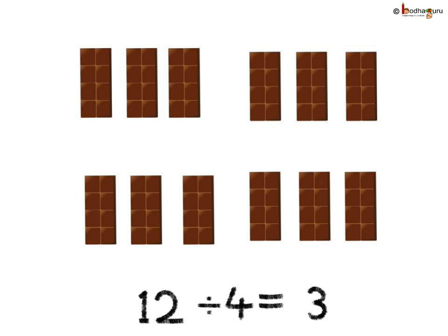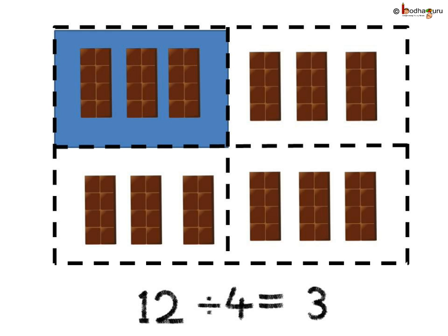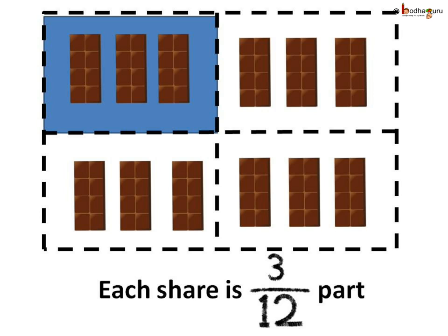Now, if we have twelve chocolates and we divide them into four parts, how would we write them? Four equal parts of twelve means twelve divided by four, which is three. So three chocolates in each of the four equal parts. Every part would have three out of the total of twelve chocolates — that is, three by twelve parts of the whole collection. Here, three is the numerator and twelve is the denominator.